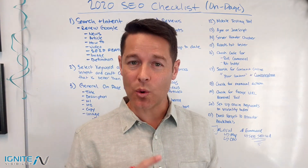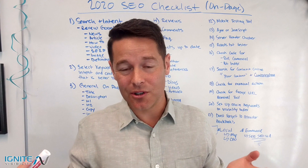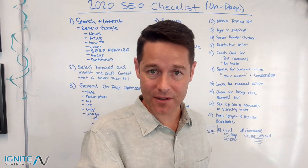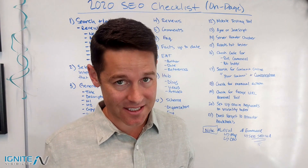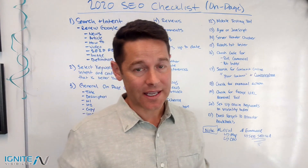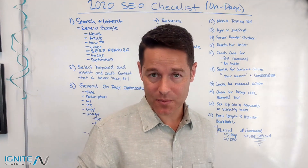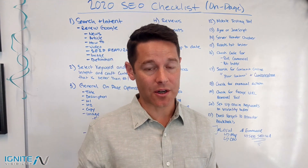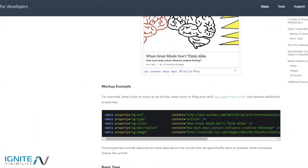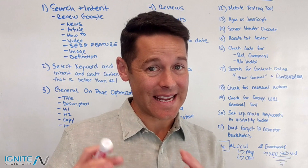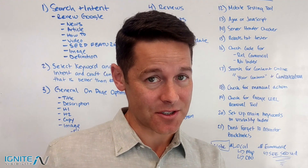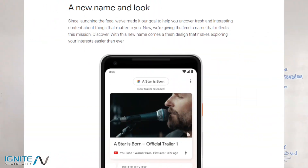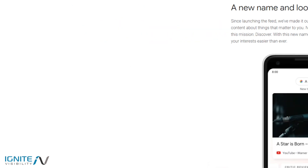Item number sixteen: check the code for rel canonicals or no-index tags. A rel canonical tells Google to credit a different page, and a no-index means Google can't index the page at all. Also make sure you have open graph tags — they work with Facebook, Twitter, and Pinterest, allowing titles, descriptions, and images to be pulled in properly. That big image is also really important for showing up inside Google Discover, so make sure it's properly formatted.